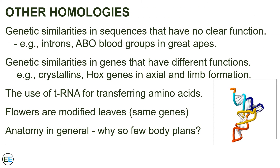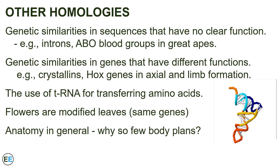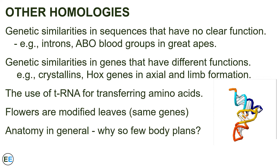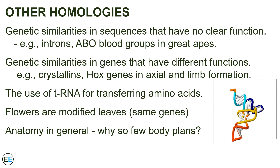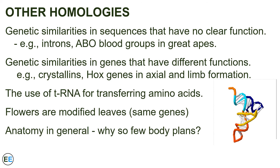There are a variety of other homologies in living things — similarities between organisms that are better explained by shared ancestry than by the constraints of current function. There are genetic similarities in sequences that have no clear function. For example, introns are generally excised out of the RNA during translation, so the sequence doesn't matter much, yet the introns of different species are often similar. The ABO blood group system doesn't have a clear function — why do we share these blood groups with chimpanzees and gorillas? Because our common ancestors had those blood groups. There are also genetic similarities in genes that have very different functions: crystallin genes in some species make up the structural component of the lens of the eye, and are almost identical to genes used to produce digestive enzymes. The sequences of those genes are so similar because they are both recently descended from a single gene that did both functions.